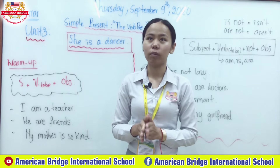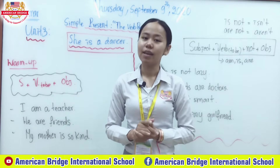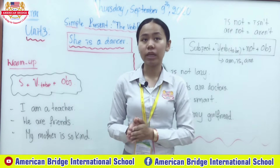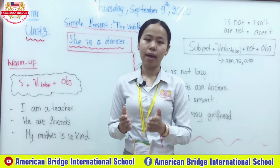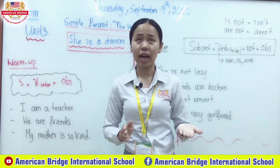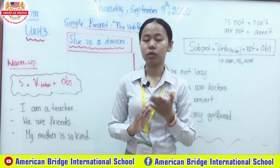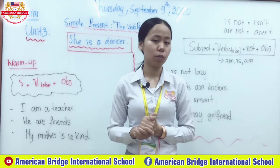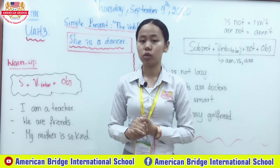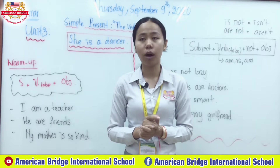Before we start today's lesson, let's review what we learned yesterday about the simple present of the verb 'be.' We use the verb 'be' in three forms: am, is, and are. For subject 'I' we use 'am'; for 'he,' 'she,' 'it' we use 'is'; and for 'you,' 'we,' 'they' we use 'are.'